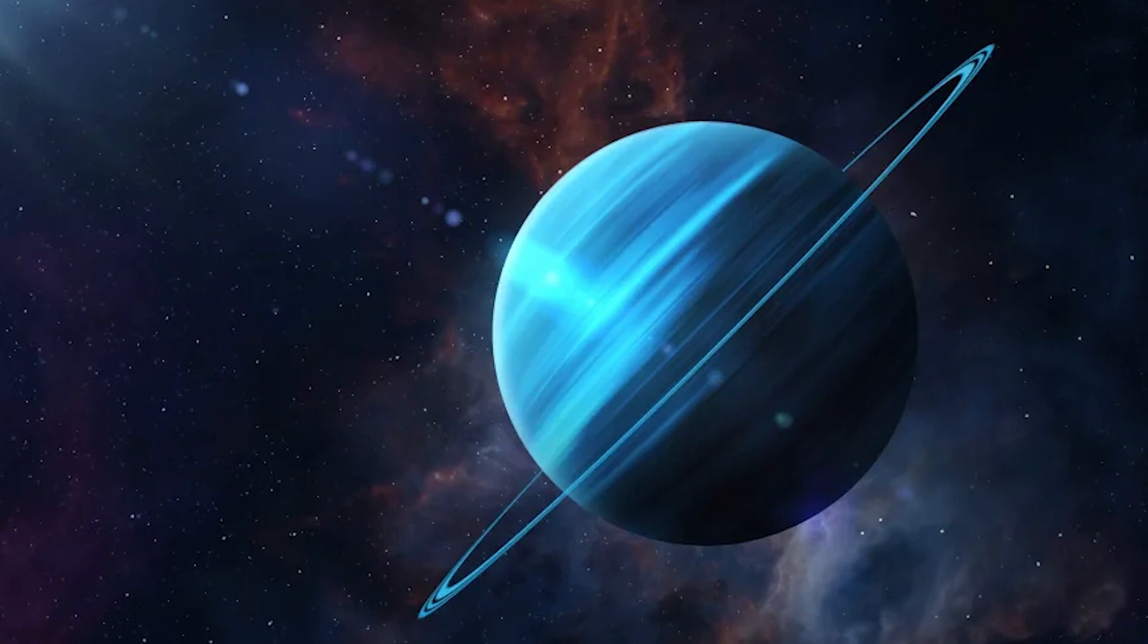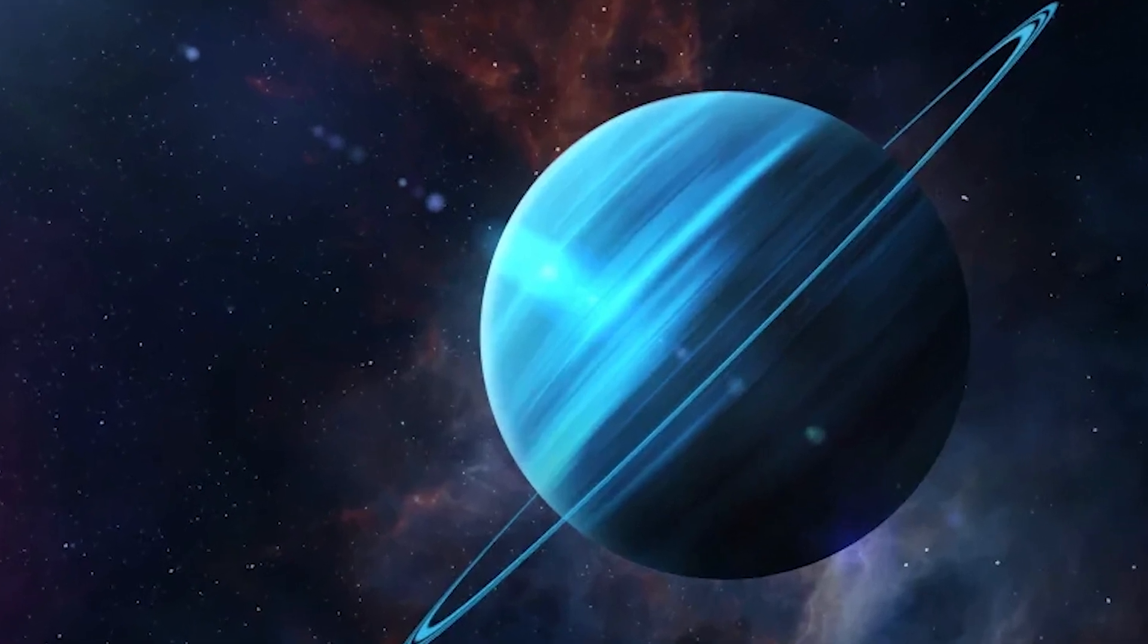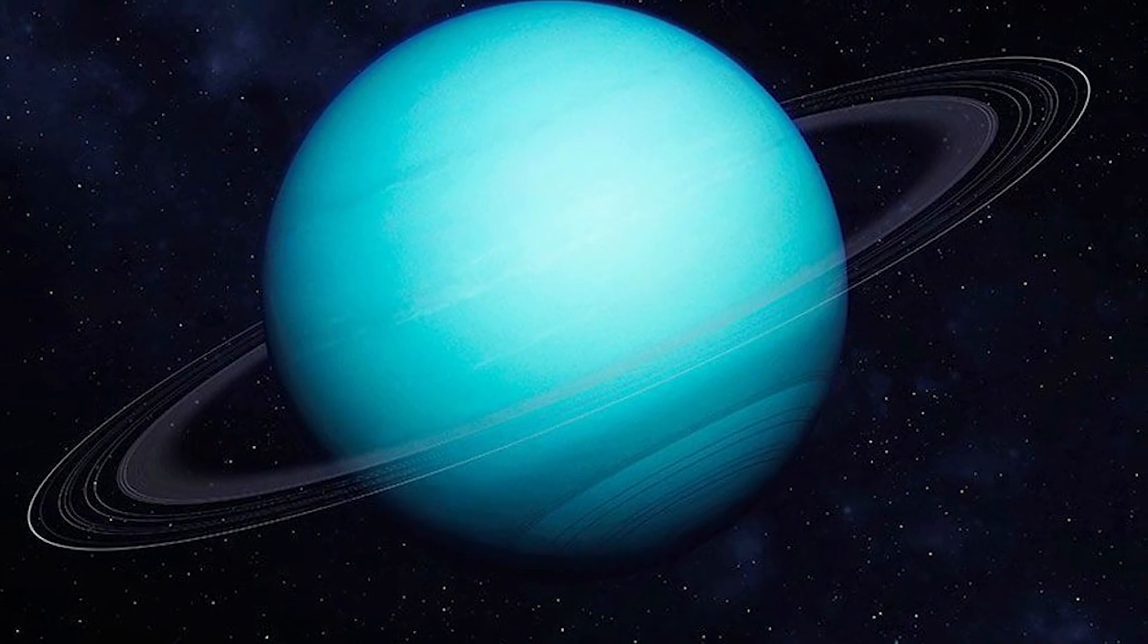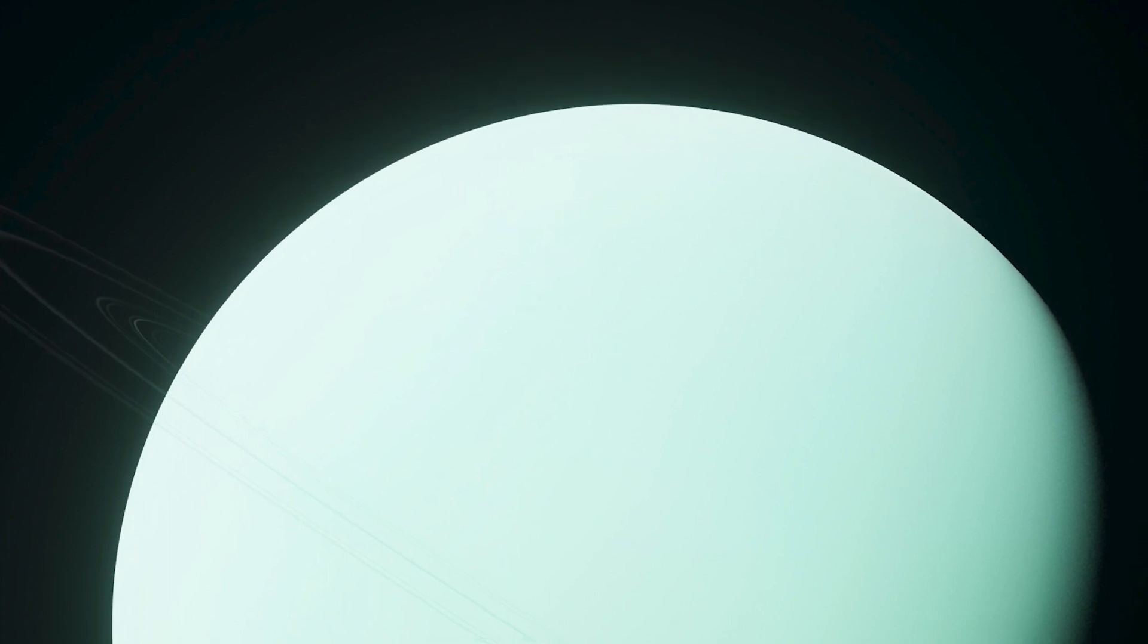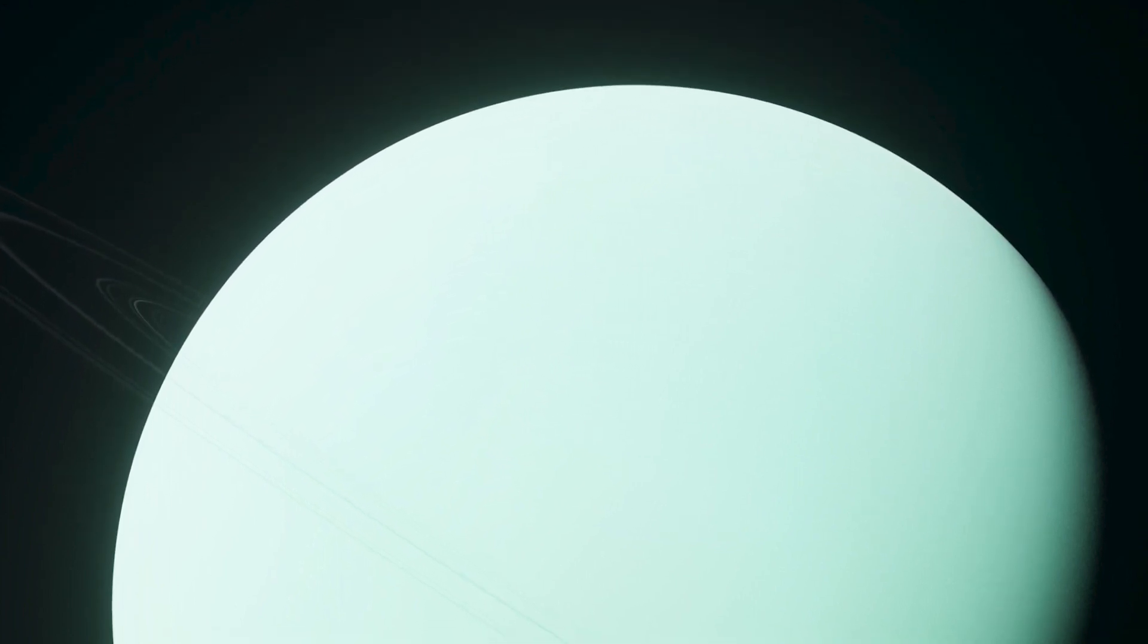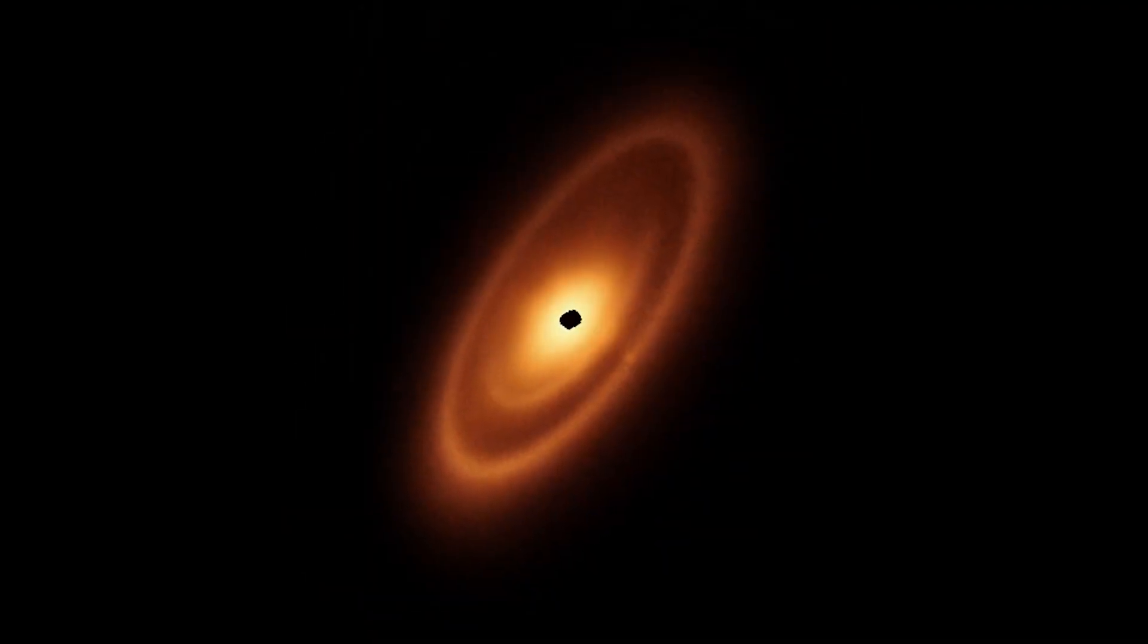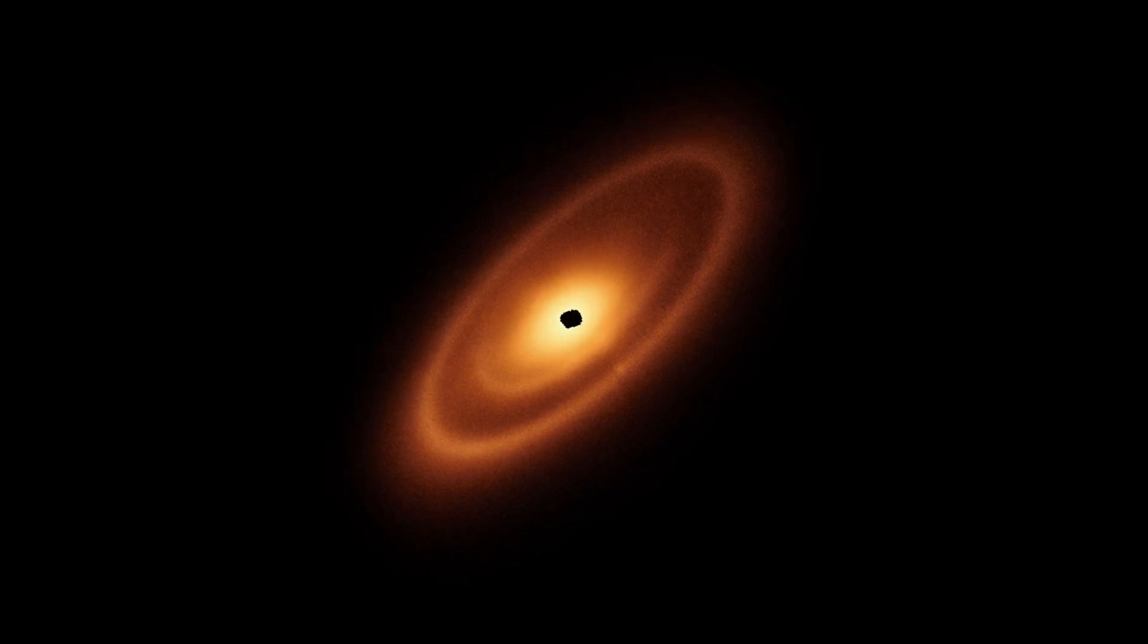However, the reason why Uranus lacks much of the internal heat source is not entirely clear. There might have been a factor that hindered this process on Uranus, possibly a collision early in the development of the planet that knocked it on its side.